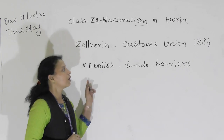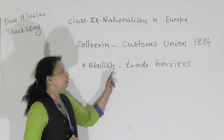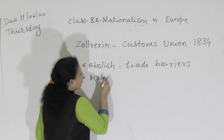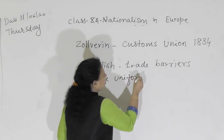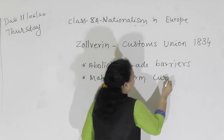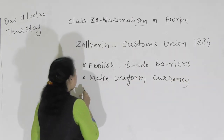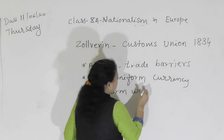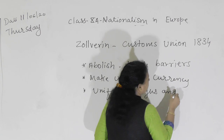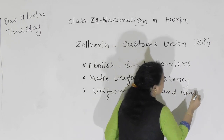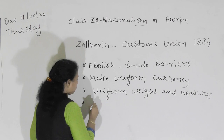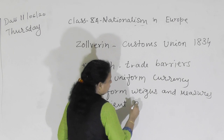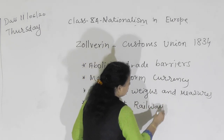The Zollverein's main aim was to abolish trade barriers, to make a uniform currency — the same currency — and uniform weights and measures. They also introduced an efficient transport system, for example the railway.